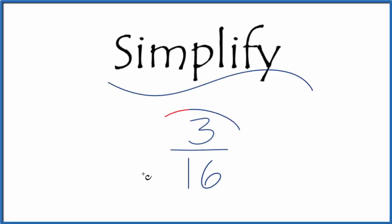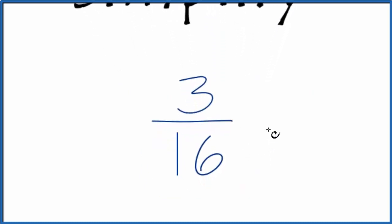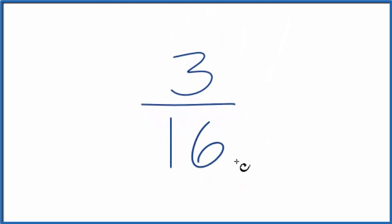Let's simplify the fraction 3 sixteenths. So what we're trying to do is we're trying to find another fraction that's equal, is equivalent to 3 sixteenths, but is in lowest terms.